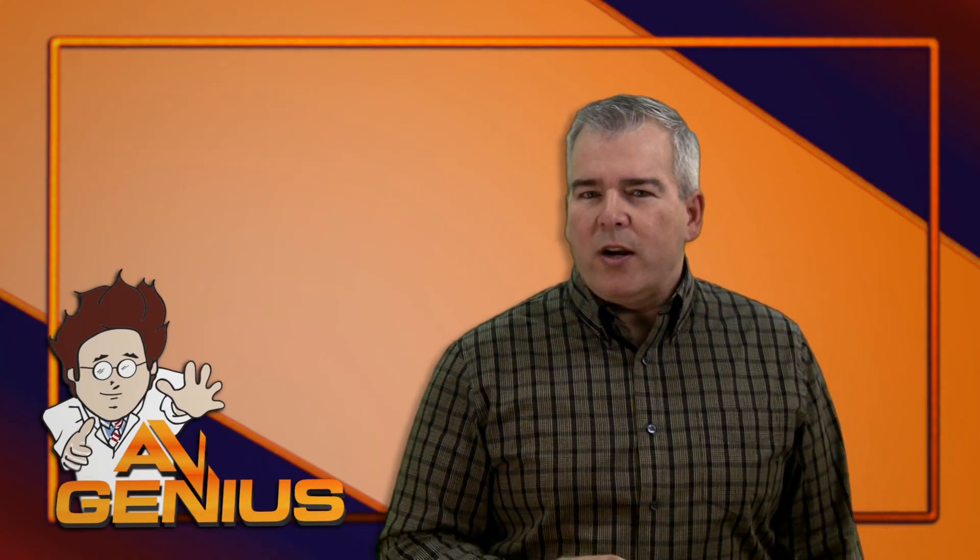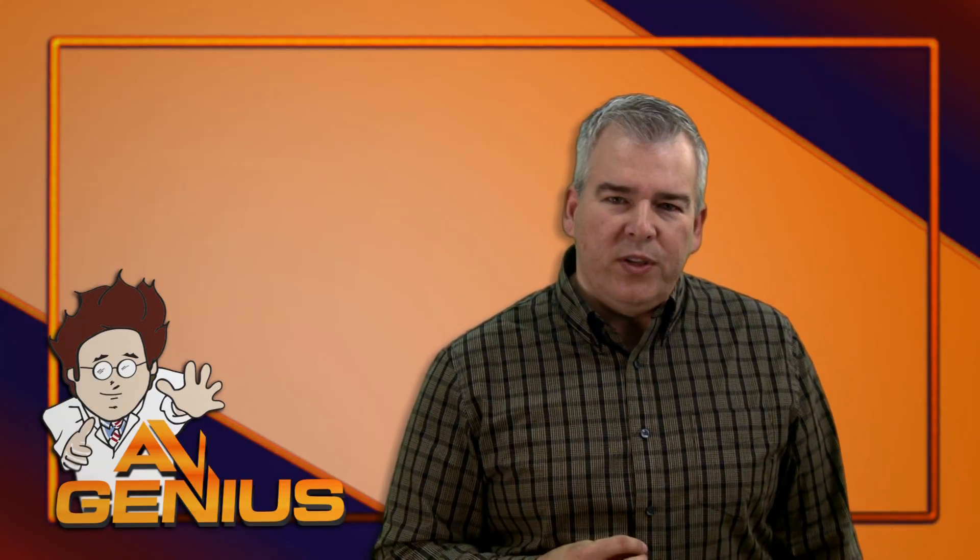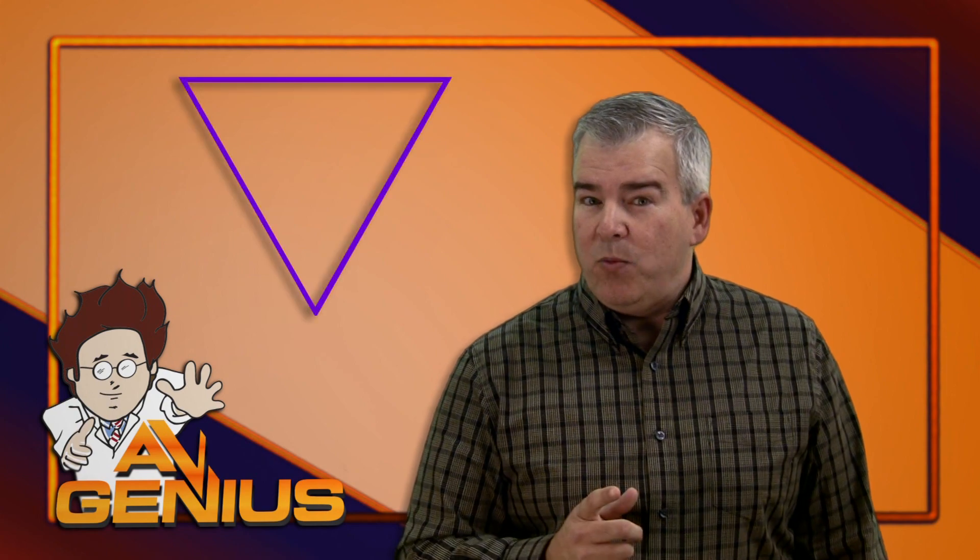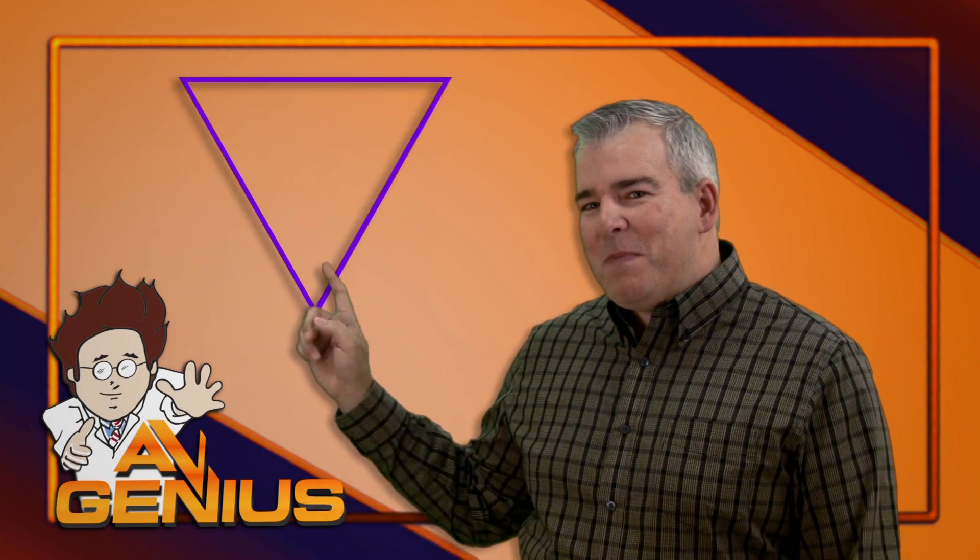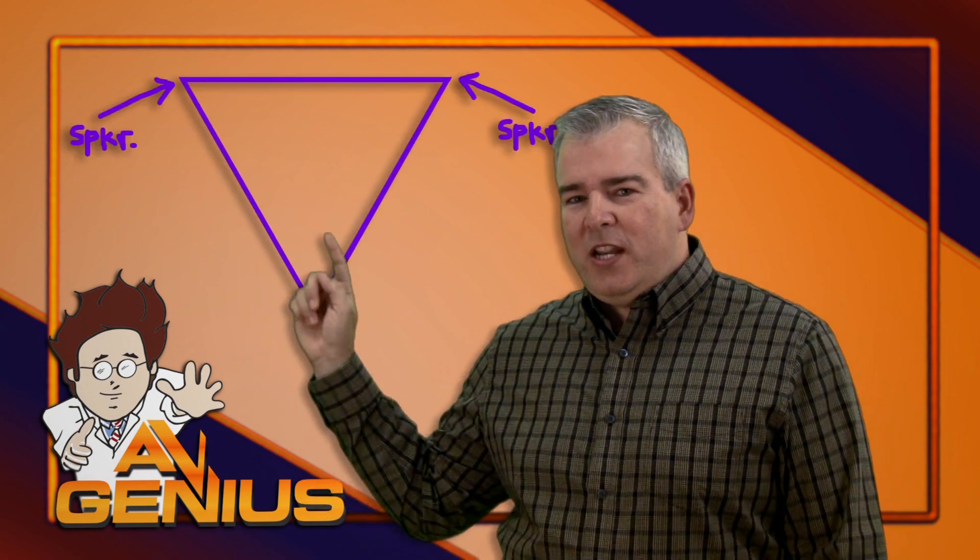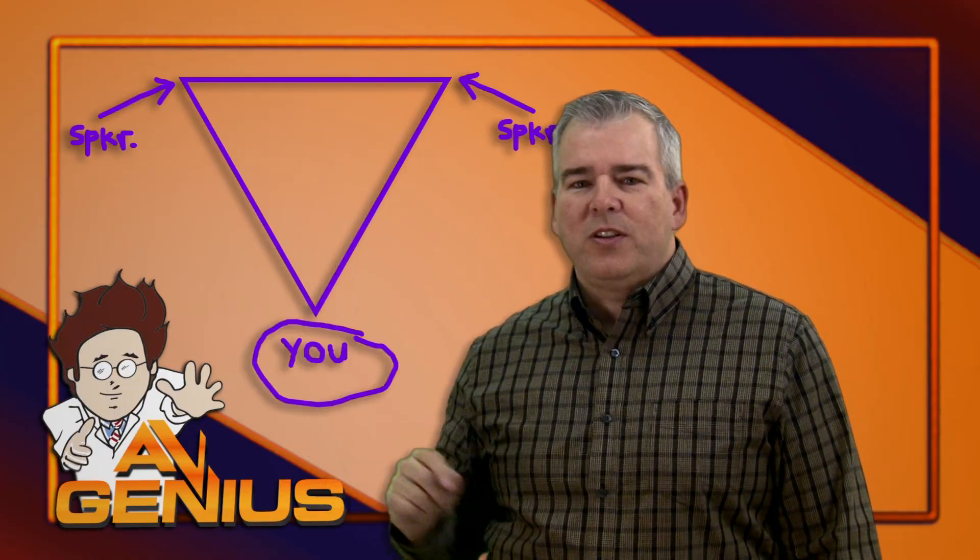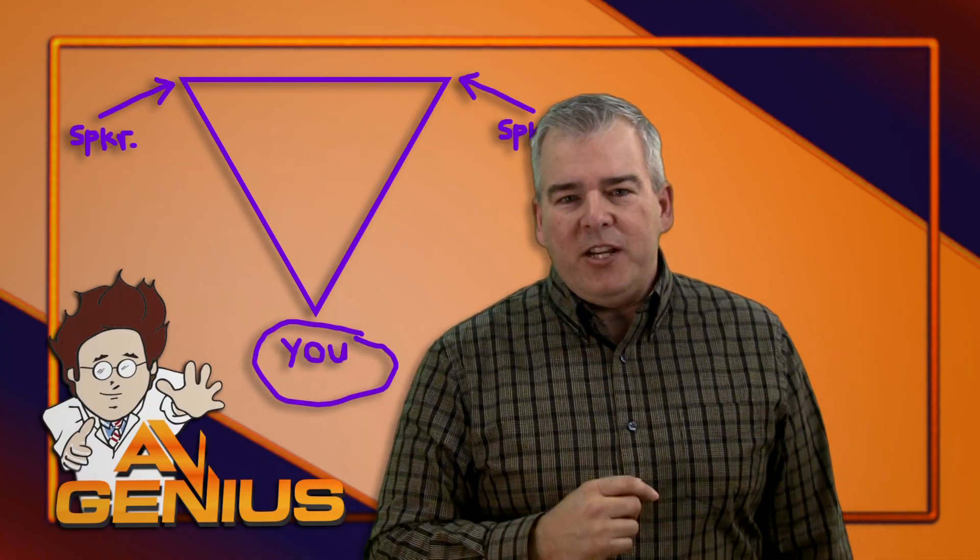Stereo requires two speakers that form an equilateral triangle with the listener. You were awake in 8th grade, weren't you? In order to be part of an equilateral triangle, you need to be right in between the two speakers, and the same distance from each speaker as the speakers are from each other.